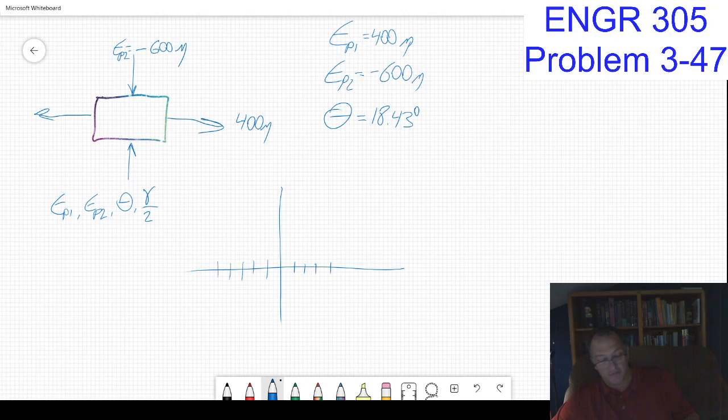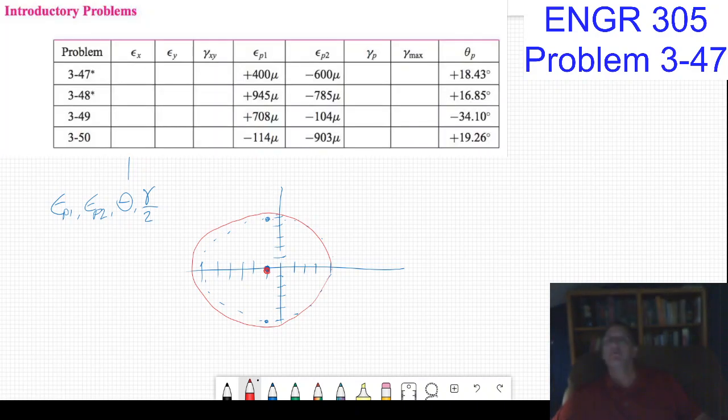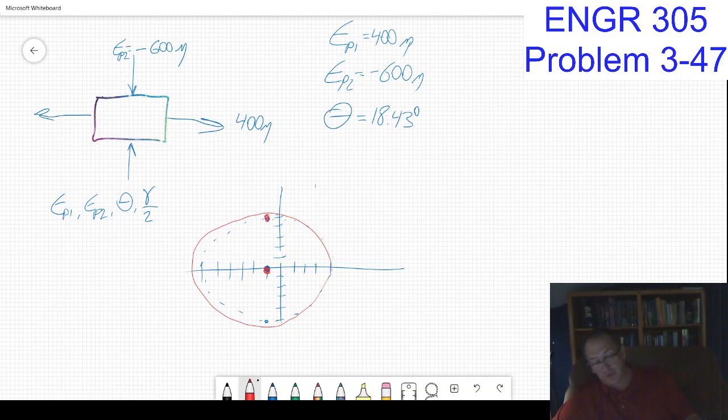I'm going to draw my coordinate system. Epsilon_p1 is 400, so one, two, three, four. Epsilon_p2 is minus 600: one, two, three, four, five, six. That defines my circle. This is a kind of a cool problem. My center is at minus 100 and my radius is 500.